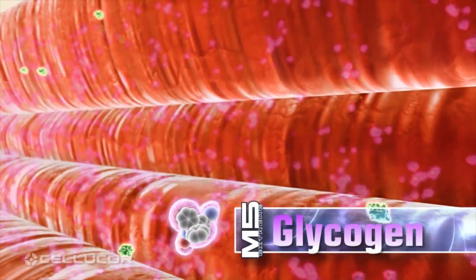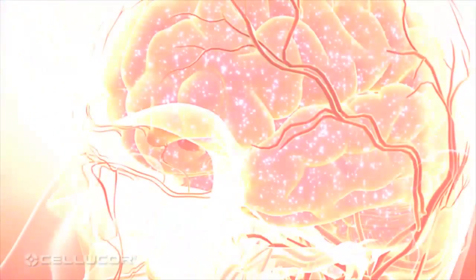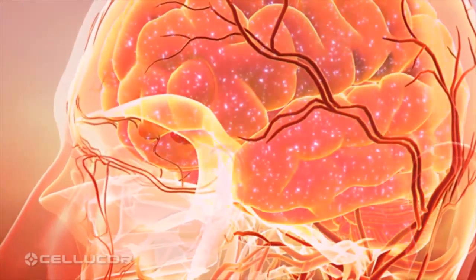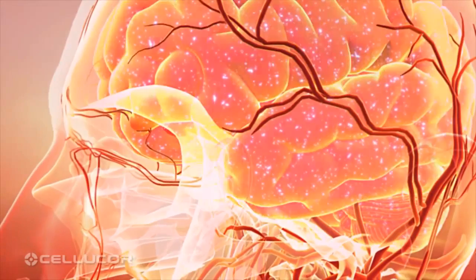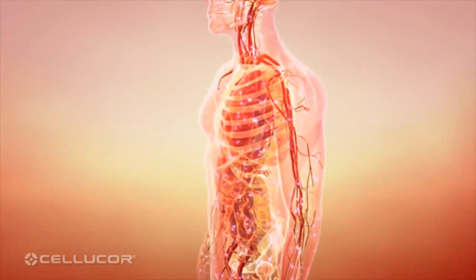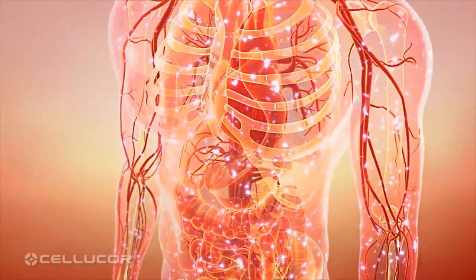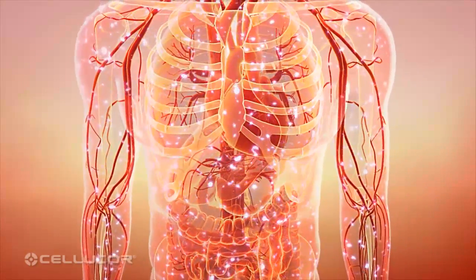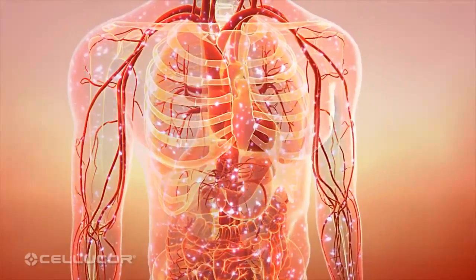M5 Extreme also contains caffeine and other energy-enhancing factors that directly increase ATP production as well as the production of certain brain neurotransmitters. These neurotransmitters help increase mental energy and focus.